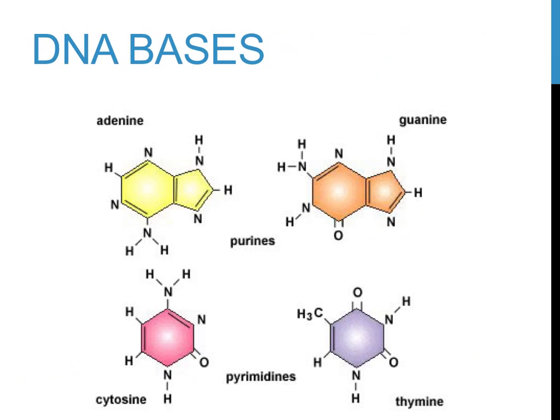Computers use binary code, a whole bunch of zeros and ones, to contain all the information that they do. Your body codes for all the information that it does using four different nitrogenous bases in DNA: guanine (G), adenine (A), cytosine (C), and thymine (T). The top two bases, adenine and guanine, contain two rings and are referred to as purines. The bottom two bases, cytosine and thymine, contain one ring and are referred to as pyrimidines.